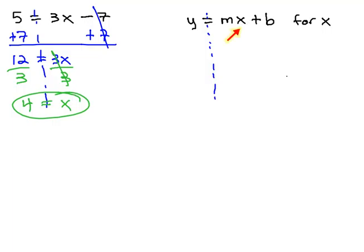We want to get the x alone. This means we need to get rid of everything else on the right side of the equation. First, we get rid of whatever is added or subtracted to the x. Here, we have a positive b, which we can get rid of with a negative b on both sides.